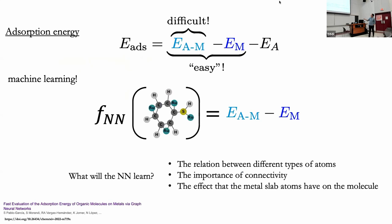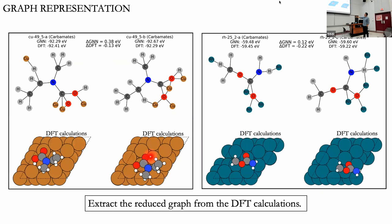Q&A: We are pretty constrained by how we move from the 3D representation to the graph representation. If we had a better algorithm to determine — for example — that a hydrogen is formally interacting with a copper atom, we could include it. The current graph construction was derived through decades of catalysis insight and algorithms developed in the 1980s. A future project is to use differentiable programming to tune all the hyperparameters of the 3D-to-2D graph mapping.